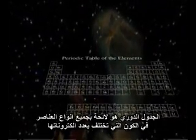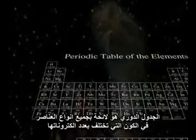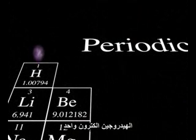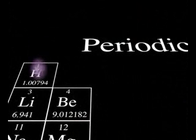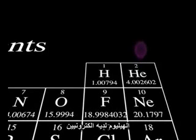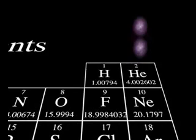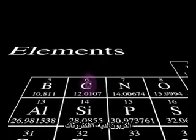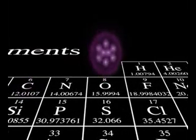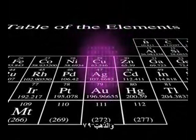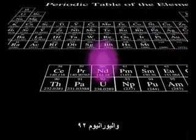The Periodic Table is a list of all the atoms in the universe that have different numbers of electrons. Hydrogen has one electron. Helium has two. Carbon has six. Oxygen, eight. Gold has 79. And Uranium has 92.